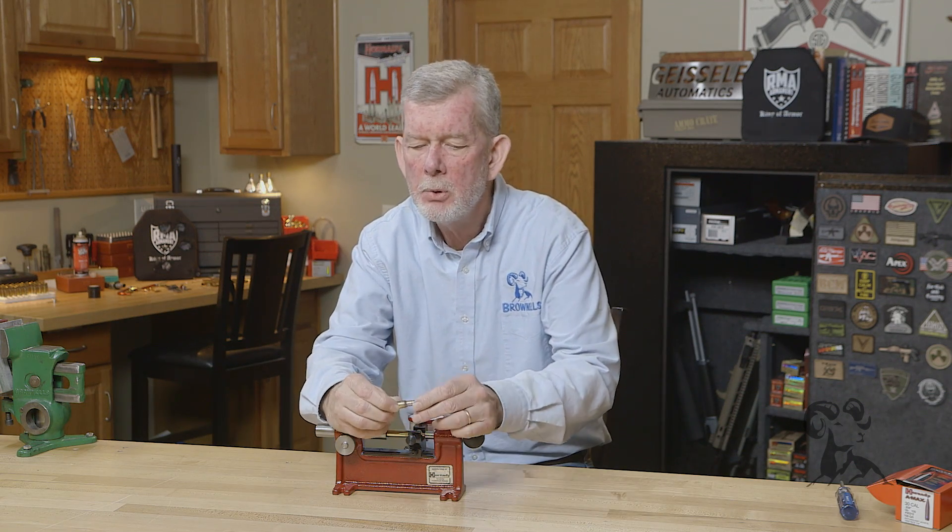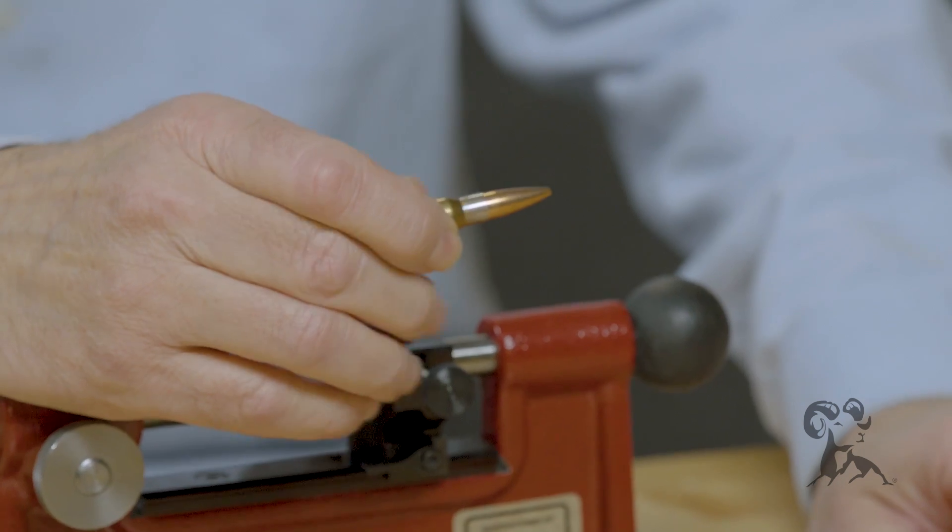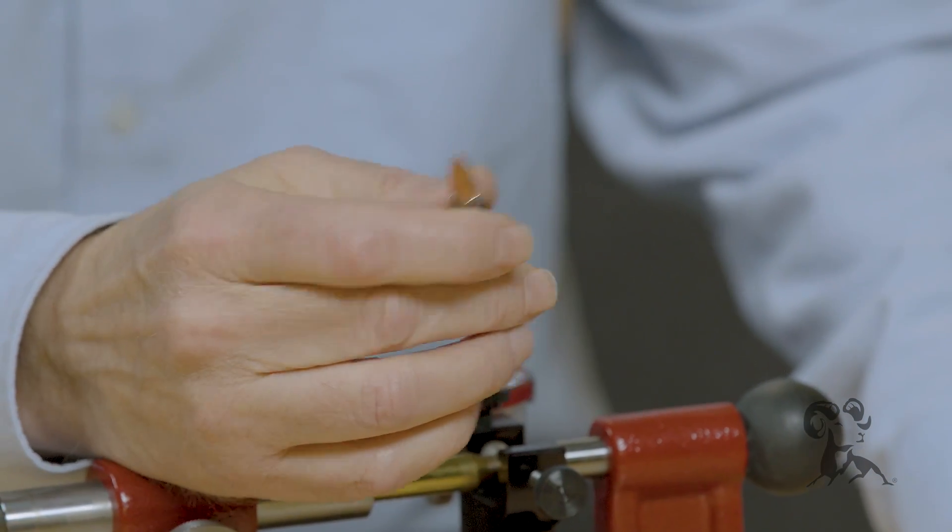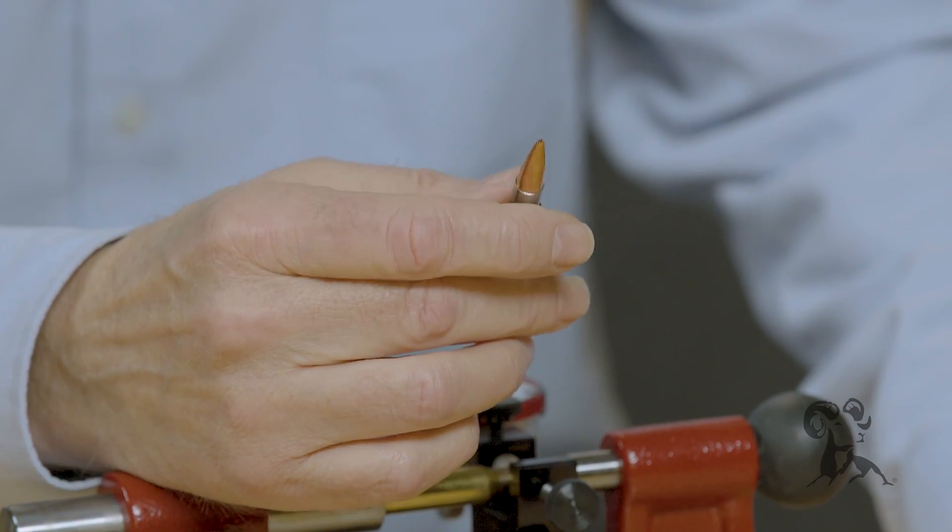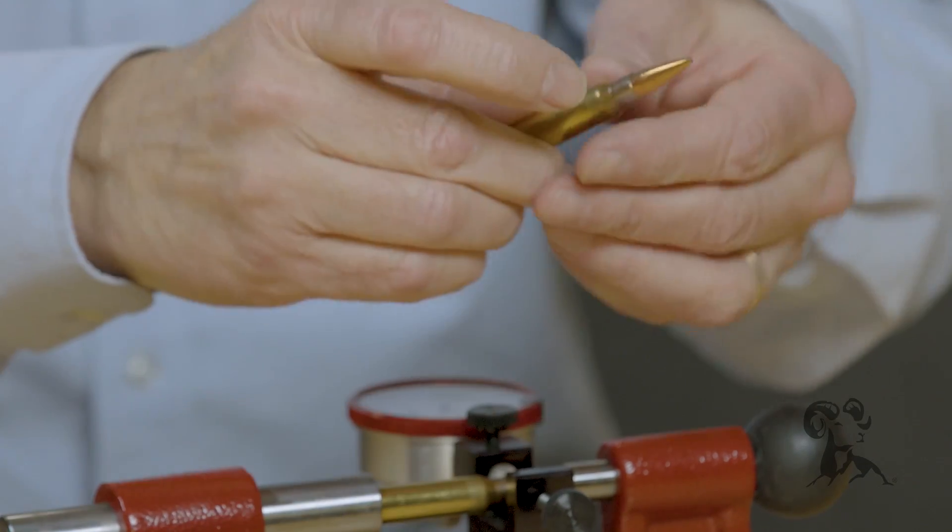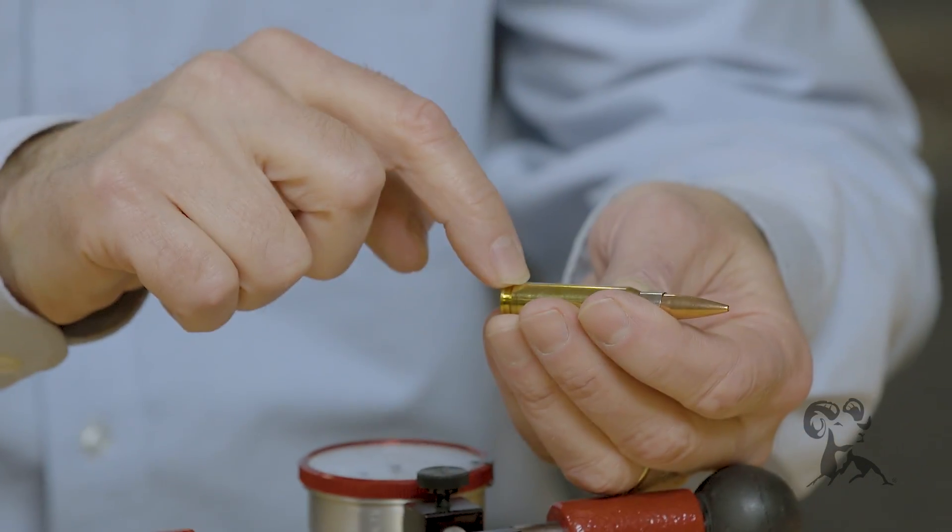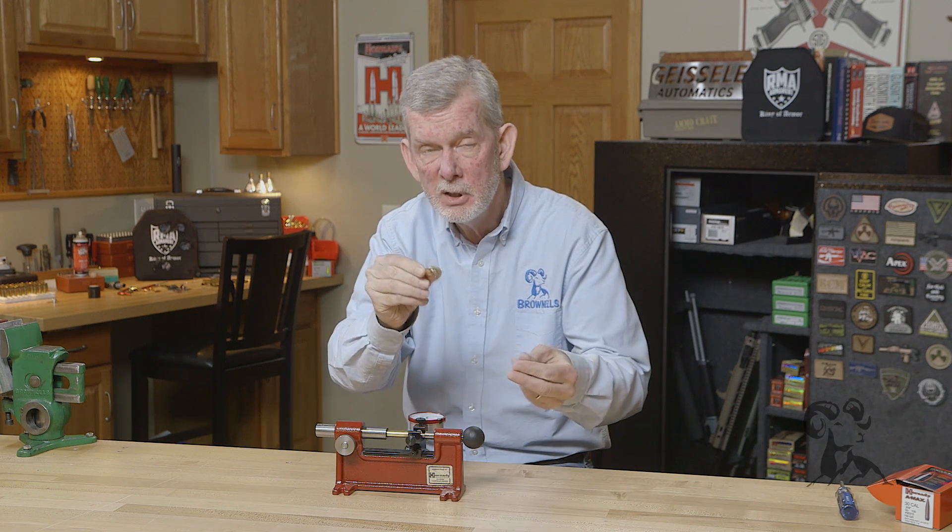So why is concentricity important? Well, accuracy-wise it presents another variable in your ammunition. If all of your cartridges had the same amount of run-out and you were to mark where the run-out is on the high point and clock it into the chamber the same way every time, the groups would be about the same as with perfectly concentric ammo.